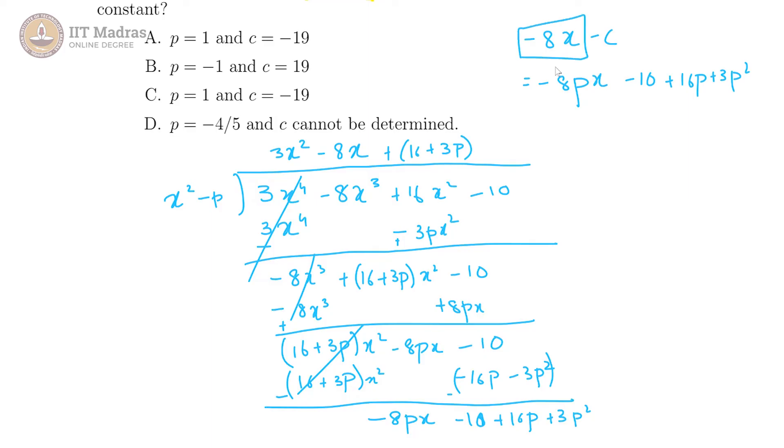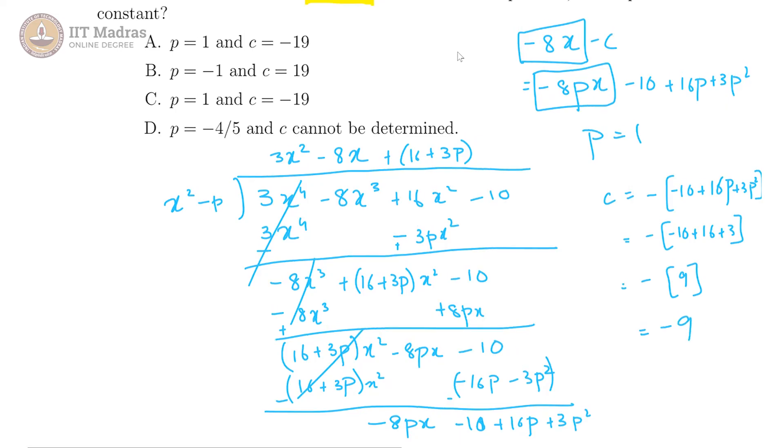The x terms have to be the same here, which gives p is equal to 1. And then c would be the negative of minus 10 plus 16p plus 3p square, which is equal to the negative of minus 10 plus 16 plus 3. That is the negative of 9, and so we get minus 9, and that would indicate that none of the options are correct.